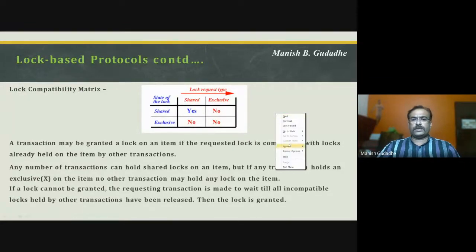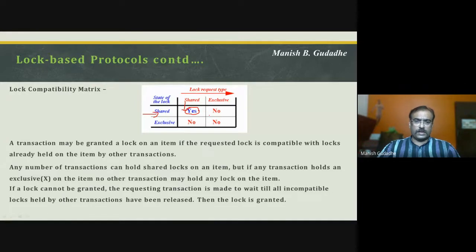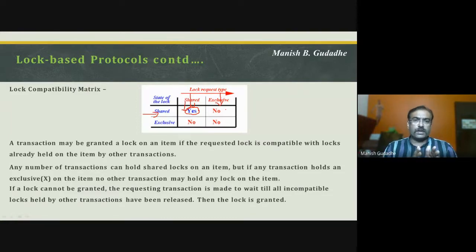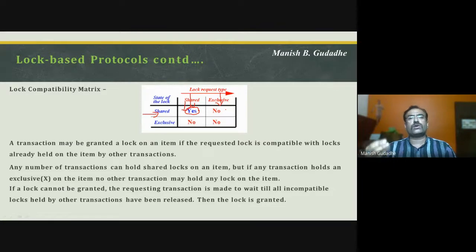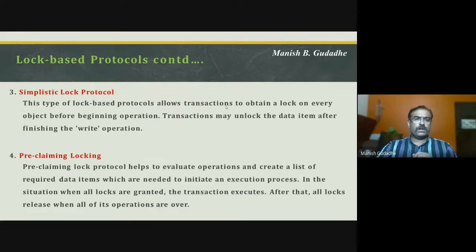The lock compatibility matrix shows: if a shared lock is held, another transaction can request a shared lock but not an exclusive lock — if someone is already reading the data, another cannot come and write. In the case of an exclusive lock, no other transaction can acquire either a shared lock or an exclusive lock. An exclusive lock can only be held by one transaction at a time.